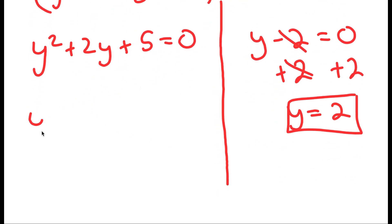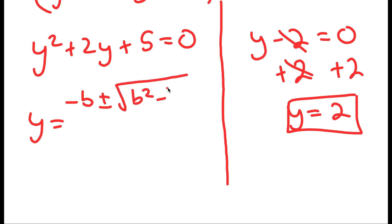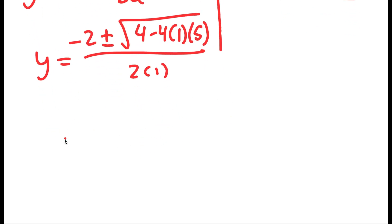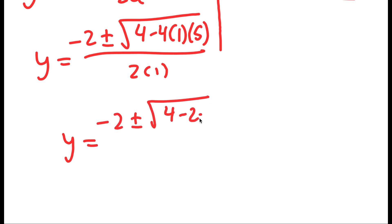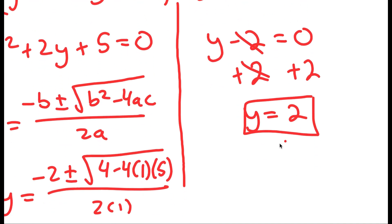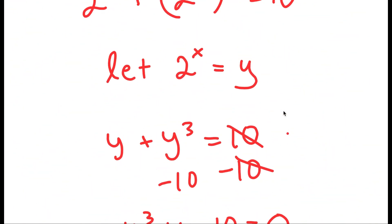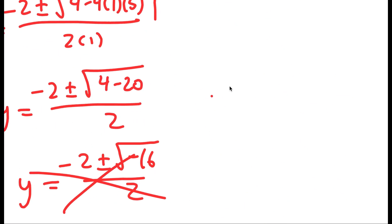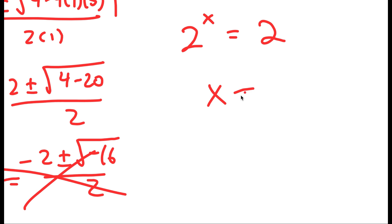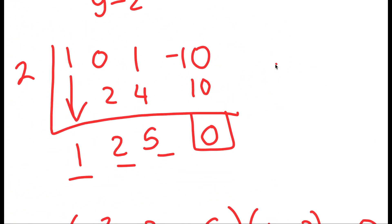For y squared plus 2y plus 5 equals 0, I'm going to use the quadratic formula: negative b plus or minus the square root of b squared minus 4ac, all over 2a. So I get y equals negative 2 plus or minus the square root of 4 minus 4 times 1 times 5, all over 2 times 1. This turns into negative 2 plus or minus the square root of negative 16 over 2. Because we have the square root of a negative number, we can only use y equals 2 as a solution. And remember, we're solving for x, not y. We let 2 to the power of x equal y, so I have 2 to the power of x is equal to 2, and the only solution is x equals 1.